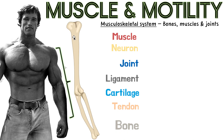We're zooming into his arm here. These are bones. You can see this large bone here in his upper arm and then these other two bones in his forearm. So his arm already has three bones — and we're ignoring the hand, obviously.